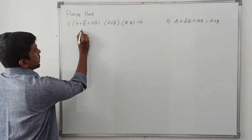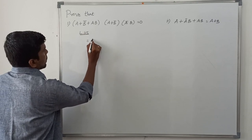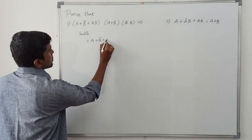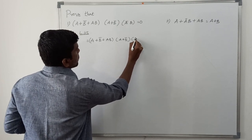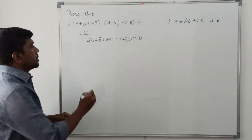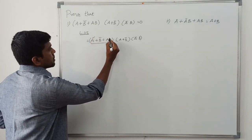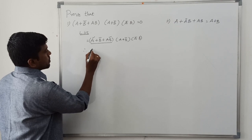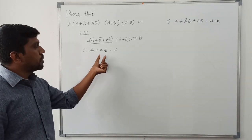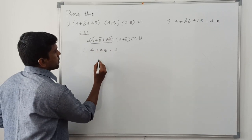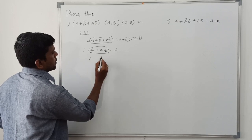For problem one, I will take the left hand side. LHS = (a + b̄ + ab)(a + b̄)(ā·b). First I take the term (a + ab). What is a + ab? a + ab equals a. This was already proved in the previous video. So I replace (a + ab) with just a in the expression.